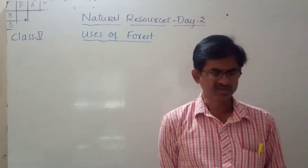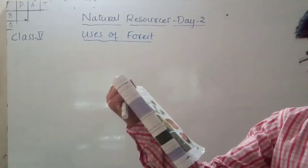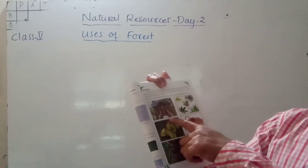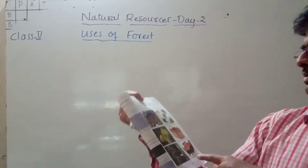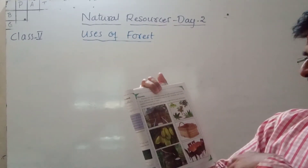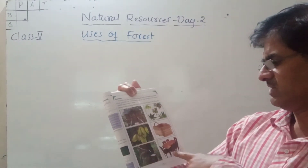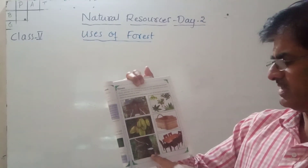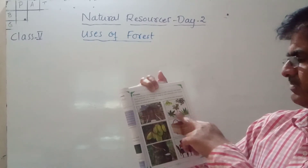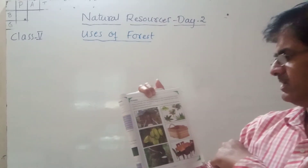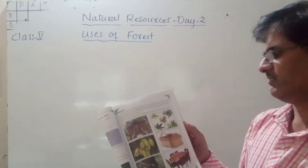Observe the pictures on page number 65 and make a list of the uses of the forest. We can build houses using wood. We can make furniture. We can get fruits from different types of forest trees. We also get medicinal plants, and baskets can be made. We can get honey from the forest — honeybees prepare honey. We also get different flowers from the forest.